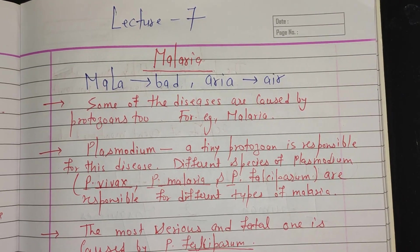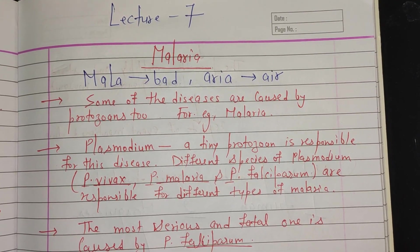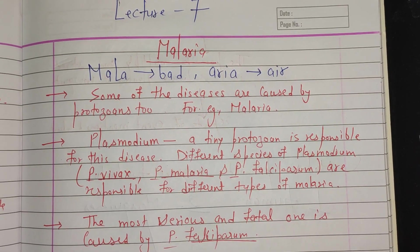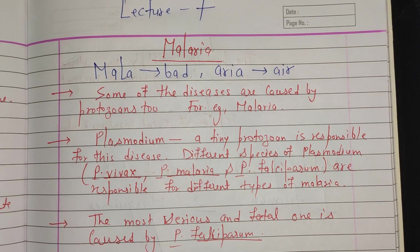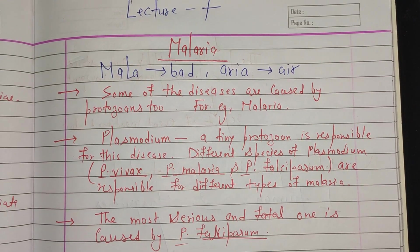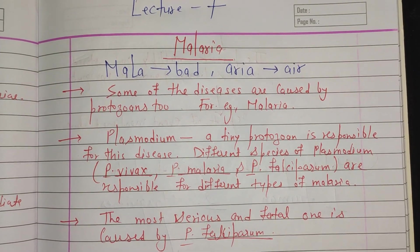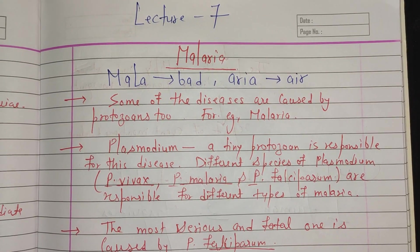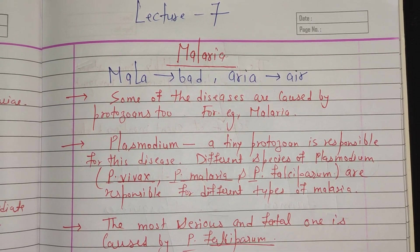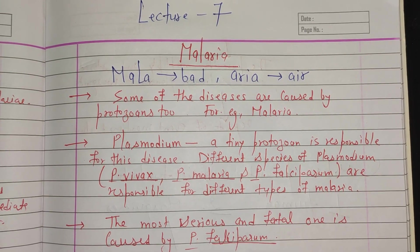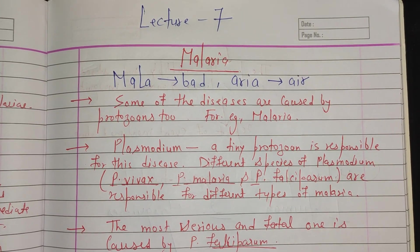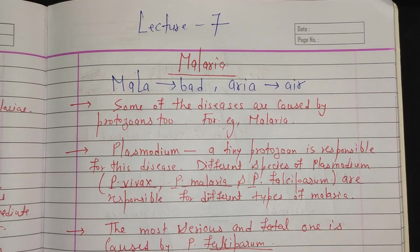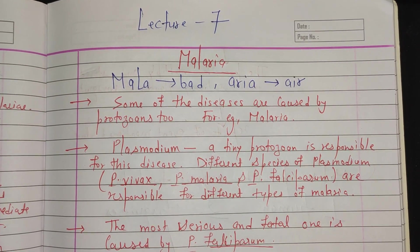Hello everyone. Today's topic is malaria, which is a very important topic of class 12th biology. Malaria has been for thousands of years a very serious disease of tropical and temperate regions. It was almost eliminated a few years back with the efforts of WHO and NMEP — National Malaria Eradication Program — but unfortunately it has appeared again.